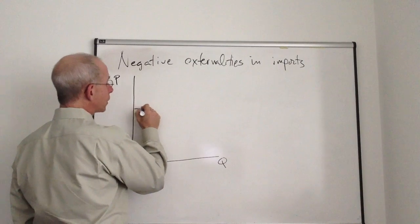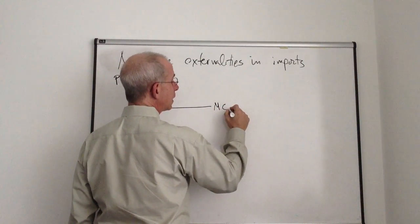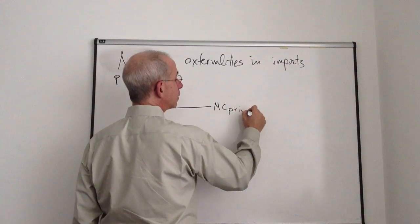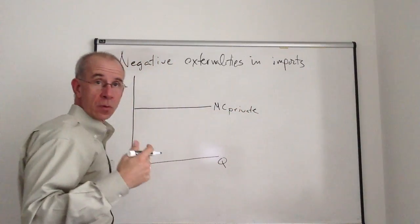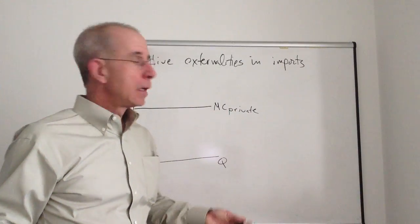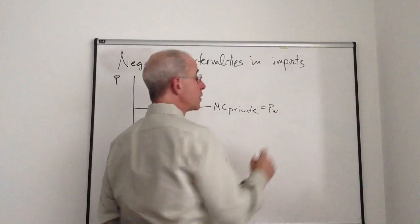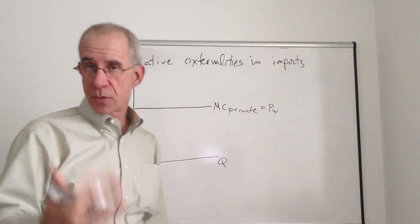Analytically, what we're talking about is a situation where the marginal cost in the private market, say for the importation of petroleum, is some world price associated with the marginal cost of producing the good.